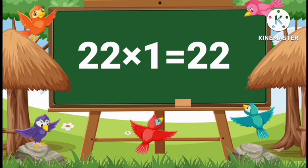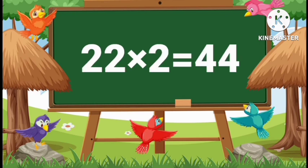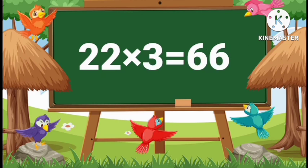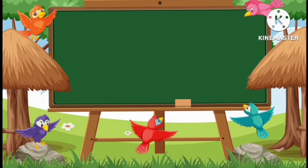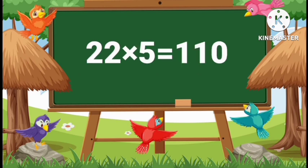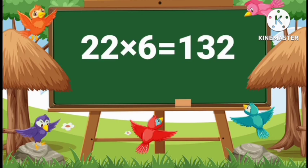22 ones are 22. 22 twos are 44. 22 threes are 66. 22 fours are 88. 22 fives are 110. 22 sixes are 132.